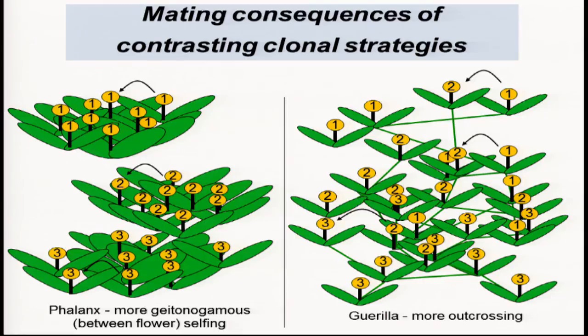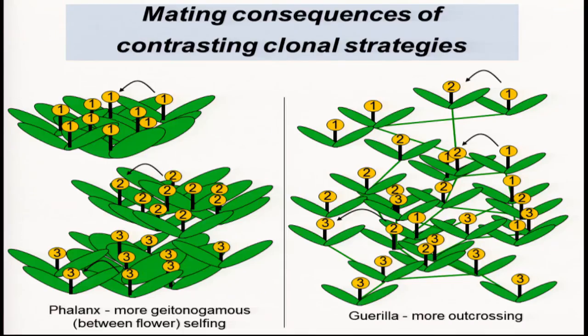I'd like to introduce a terminology from the Harper lab from the 70s — the idea that different kinds of clonal strategies could be grouped into phalanx versus guerrilla, depending on how intermingled clones become within a population. The phalanx strategy is an incremental increase in clone size without necessarily the production of stolons — which are almost like search vehicles going out and tracking resource patches. These different strategies have implications for the sex and mating system of populations.